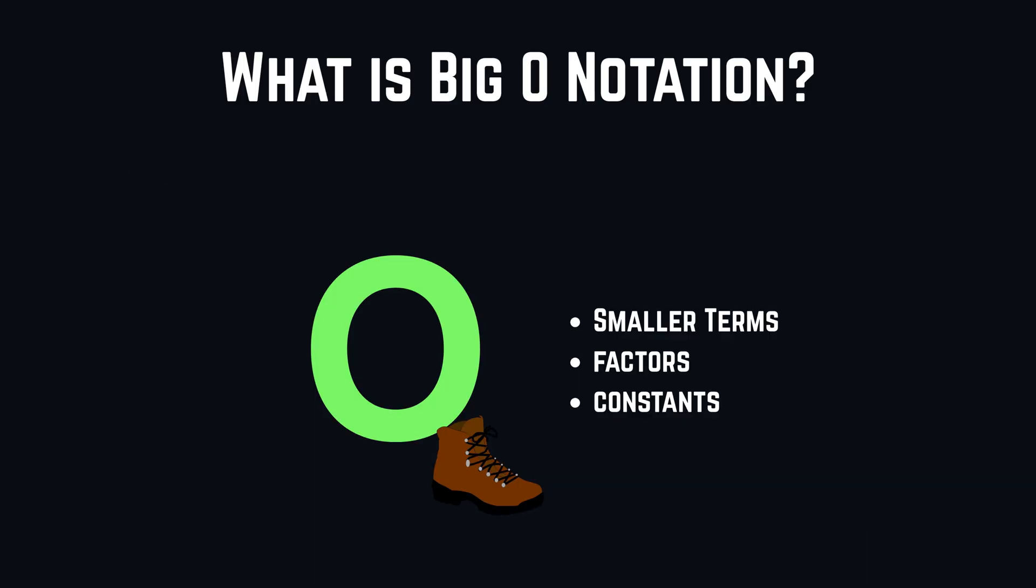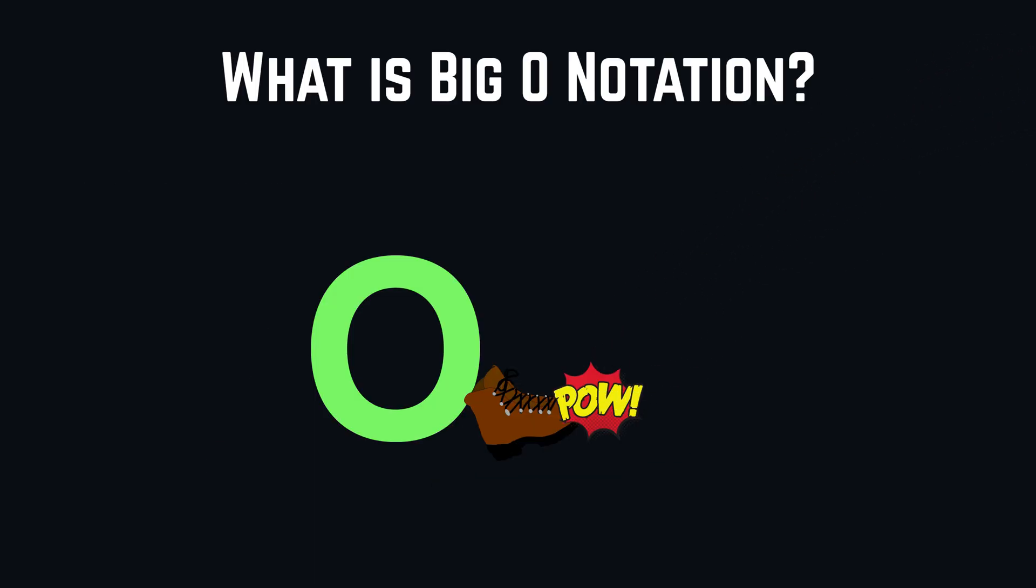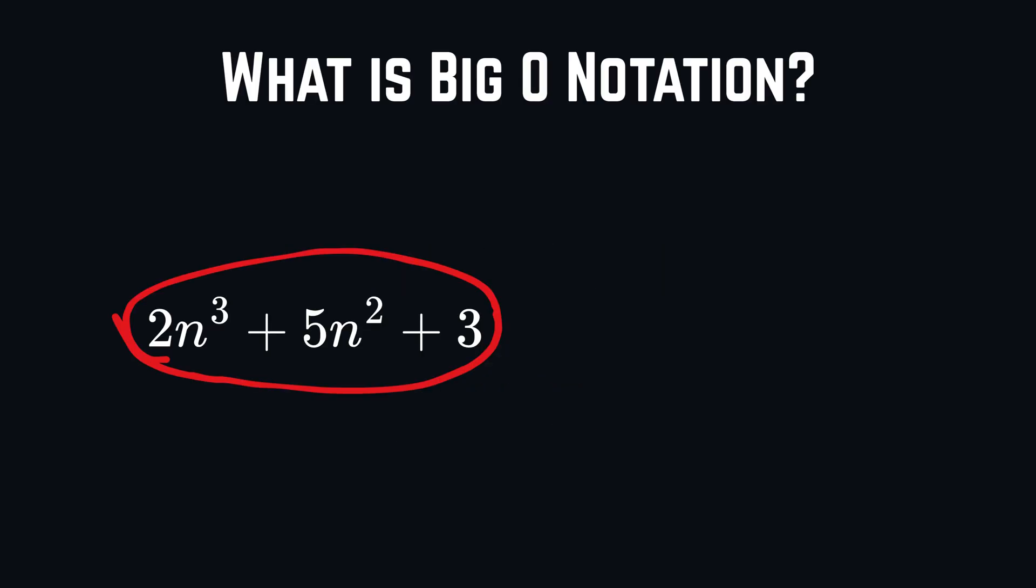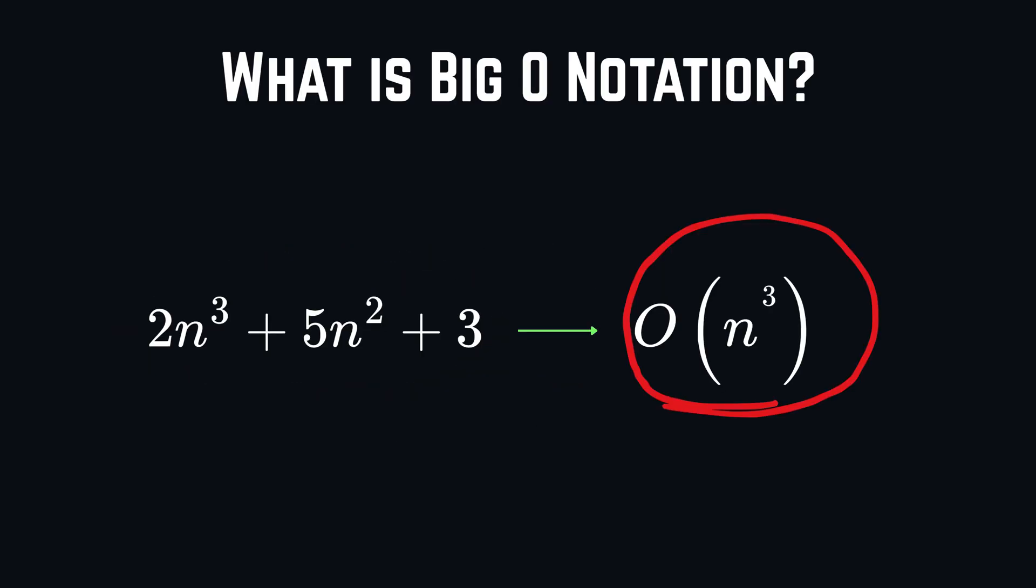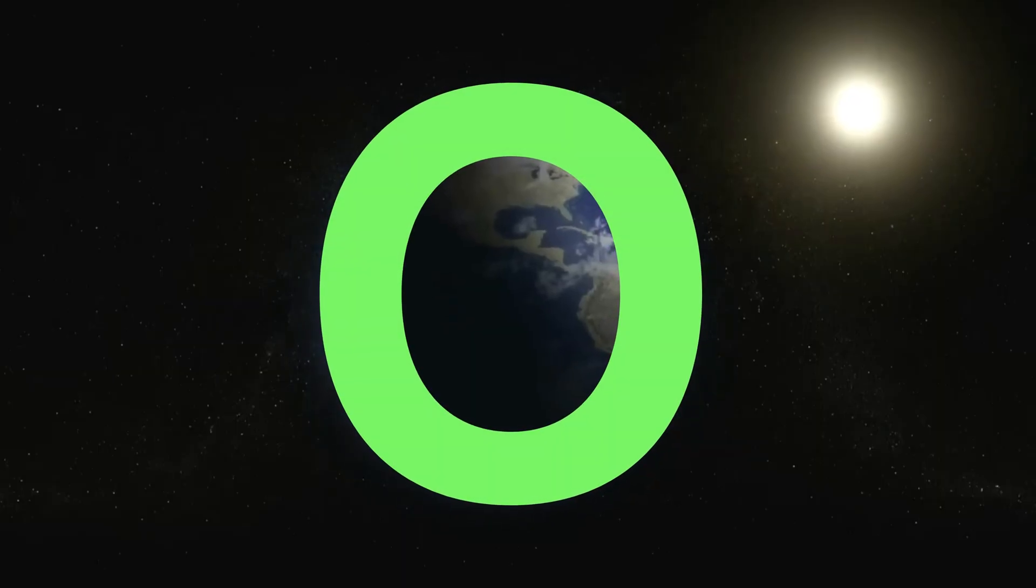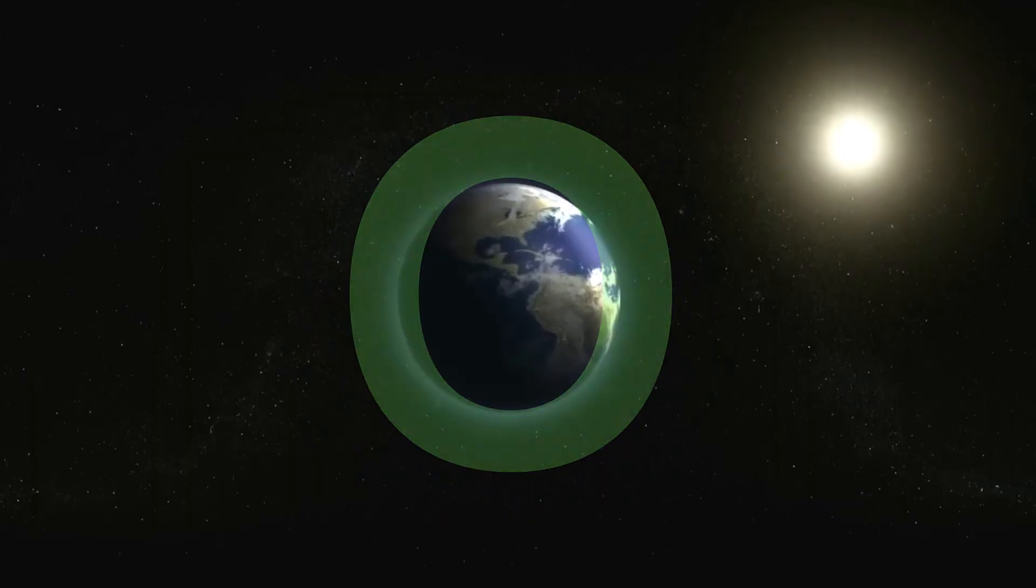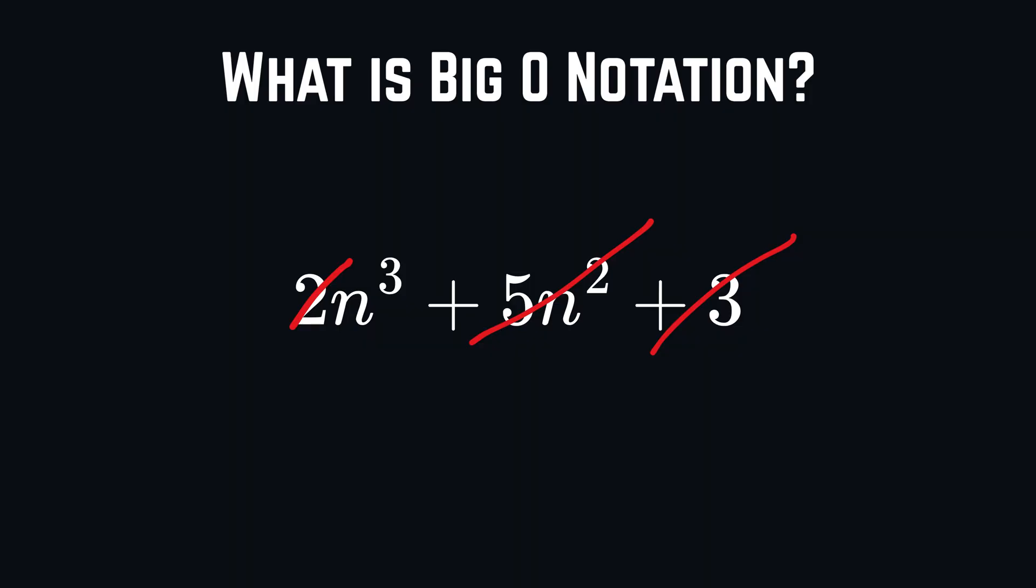For example, let's say N is our input variable, and we would now get this expression. This would be nothing more than O of N cubed. This happens out of the reason, because O notation just does a comparison on a large scale. So, these terms and factors are insignificant for the analysis.